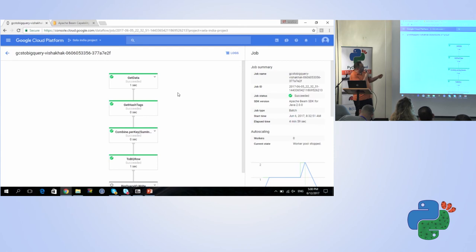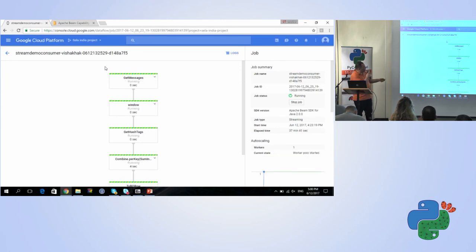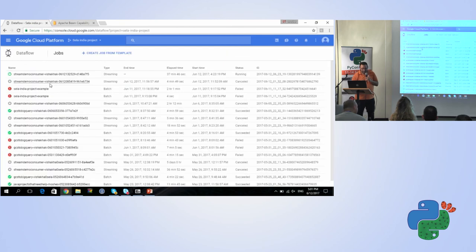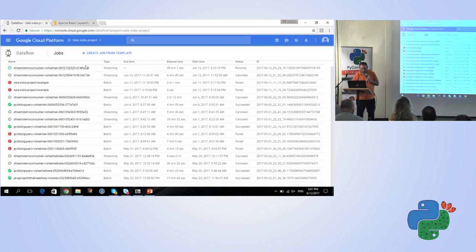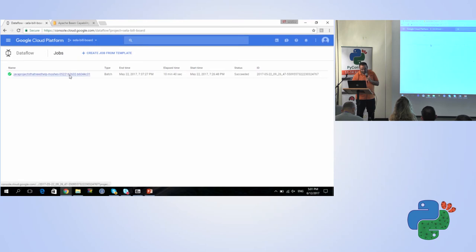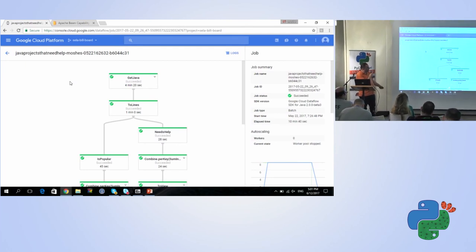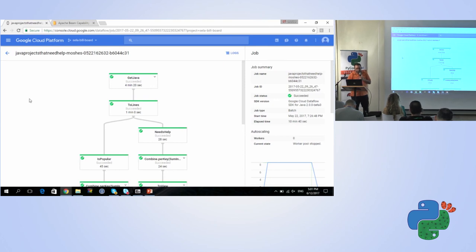Okay. So this is something that I ran yesterday in the evening. This one. Okay. Getting the Java code to HashMap and looking for the is popular and combining all the data and writing to a file that we are working with. Okay.